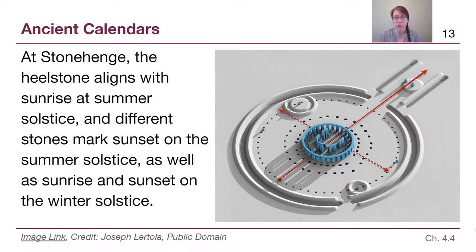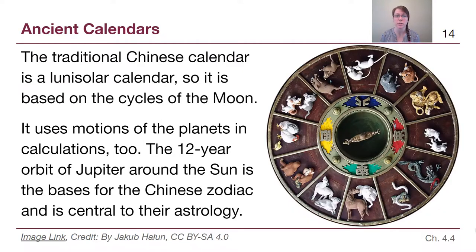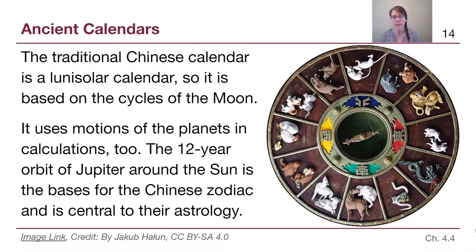It's not just the Western tradition that came up with useful calendars. The traditional Chinese calendar is also based on astronomical observations, but focuses more on the moon — something that doesn't quite align with how we think of years and days, but is very easy to track. It's also worth noting that the 12-year orbit of Jupiter was something ancient Chinese astronomers paid attention to, and it is built into their zodiac and astrology.